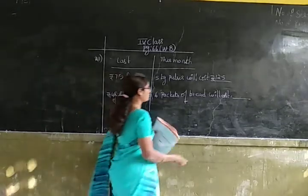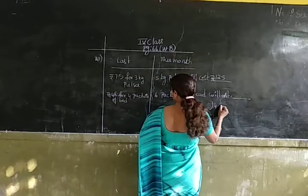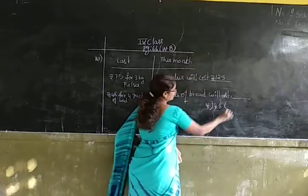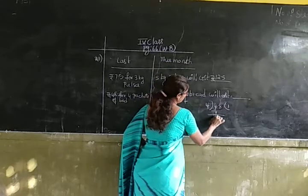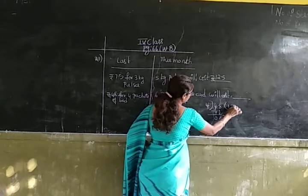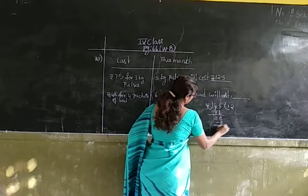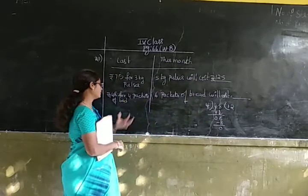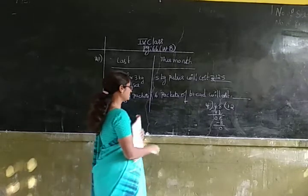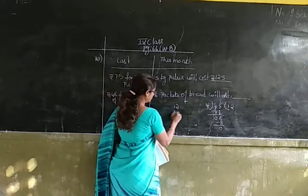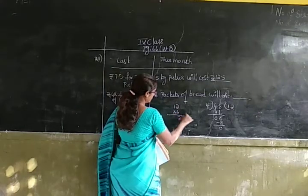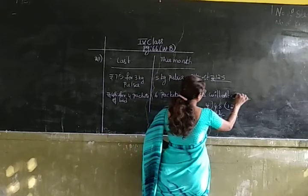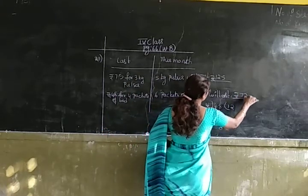First let us find out the cost of 1 packet. We divide 48 by 4: 4 ones are 4, bring down 8, 4 twos are 8. So the cost of 1 packet is Rs. 12. Now we find the cost of 6 packets: 12 multiplied by 6. 6 twos are 12, 6 ones are 6 plus 1 is 7. So the cost of 6 packets of bread is Rs. 72.